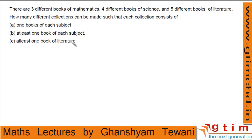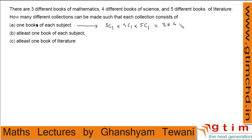Try this question: there are 3 different maths books, 4 different science books, and 5 different literature books. First, select 1 book of each subject. For mathematics there are 3 choices, for science 4, and for literature 5, so the number of ways is 3 × 4 × 5 = 60.